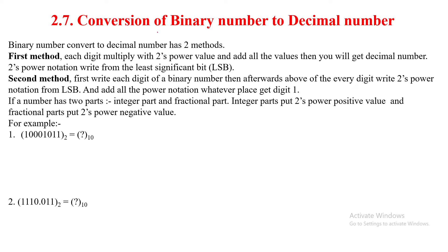Hi everyone, in this video I'm going to share with you the conversion of a binary number to a decimal number. There are two methods. First method: multiply every digit with 2's power value and add all the values to get the decimal number. Second method: write every digit, then write 2's power notation above every digit from the LSB, and add all the power notation values wherever the digit is 1. I will show you both methods.